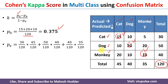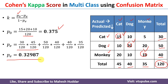For pe in the multiclass case, we consider the total actual and predicted counts for each class. Actual cat = 30, predicted cat = 45: so (30/120) × (45/120). Actual dog = 50, predicted dog = 40: so (50/120) × (40/120). Actual monkey = 40, predicted monkey = 35: so (40/120) × (35/120). Summing these terms gives pe = 0.32987.